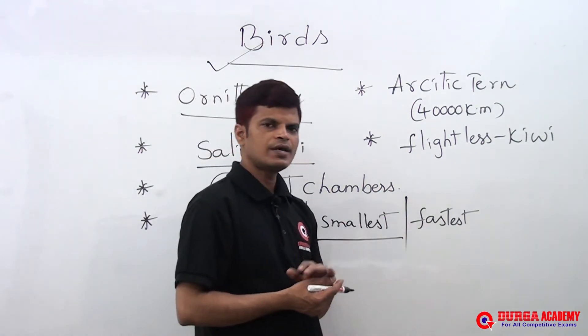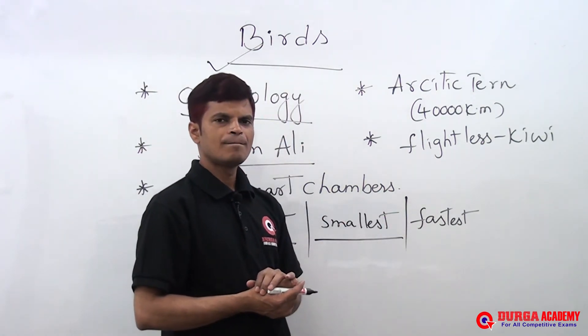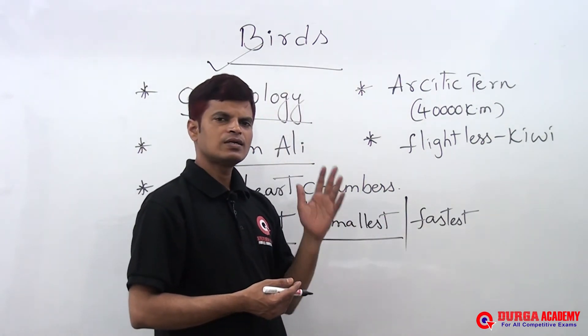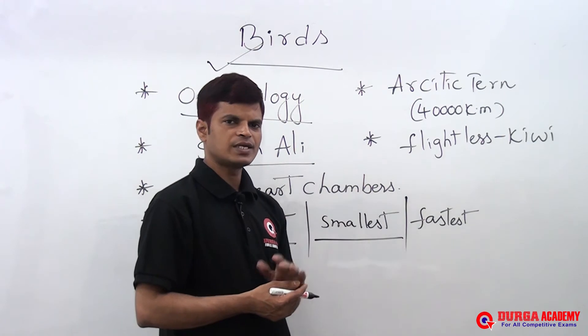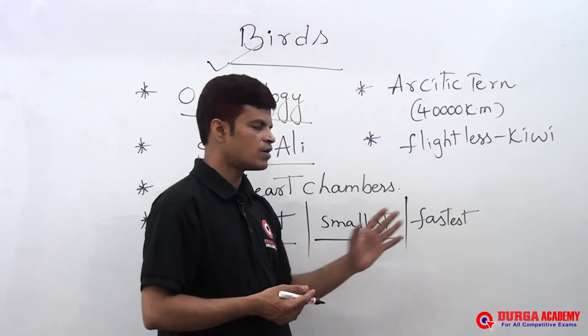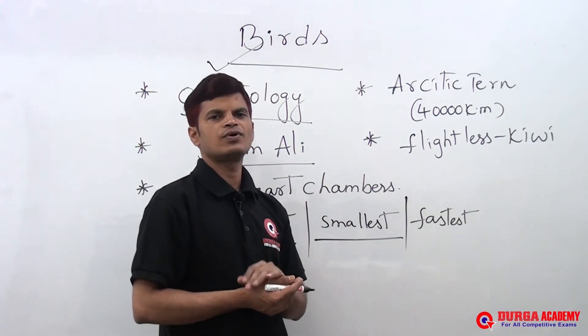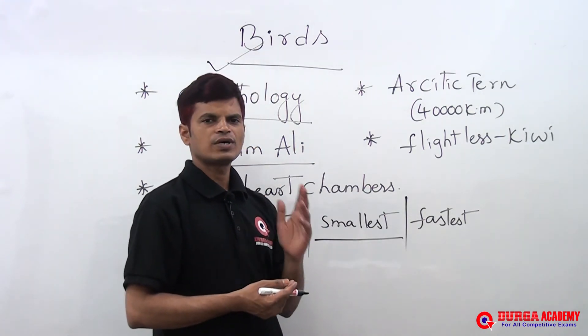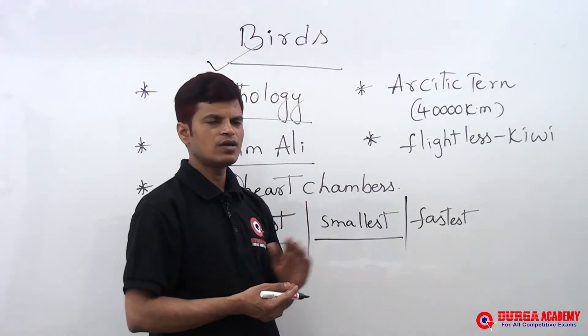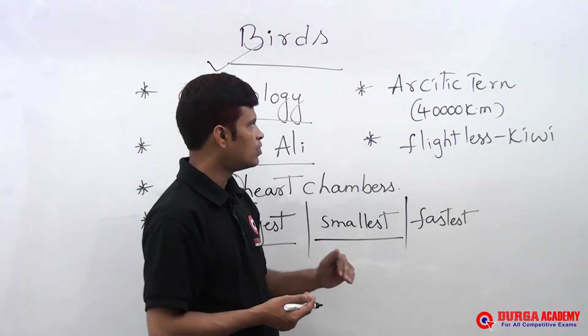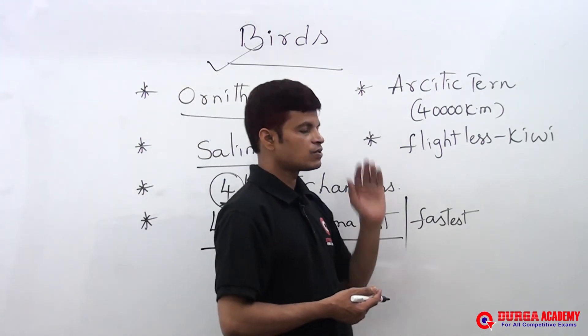The fastest bird in the world is the swift, which can fly at 300 kilometers per hour.